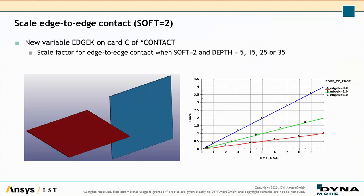For soft equal to contact — the segment-to-segment contact — a new variable edge K is now available on card C of star contact. With this parameter, you can scale the edge-to-edge contact stiffness for soft equal to and depth options, allowing a different contact stiffness for edge-to-edge versus segment-to-segment contact, which gives more flexibility and hopefully more realistic results.